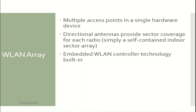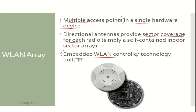A Wireless LAN Array consists of multiple access points in a single hardware device. Directional antennas provide sector coverage for each radio, making it simply a self-contained indoor sector array. It has embedded wireless LAN controller technology built in.